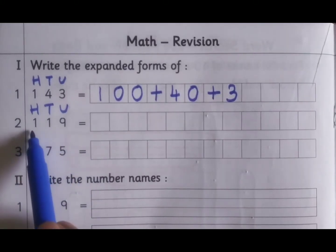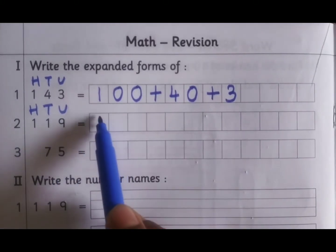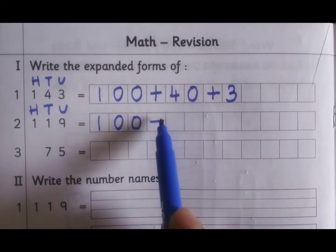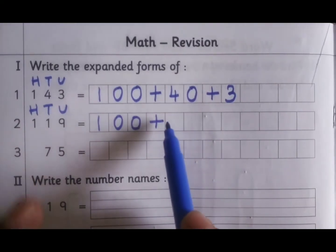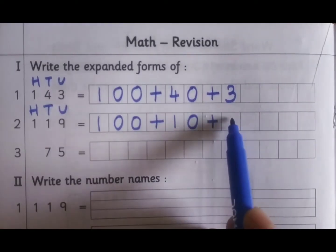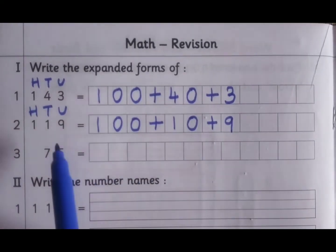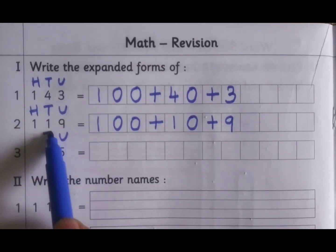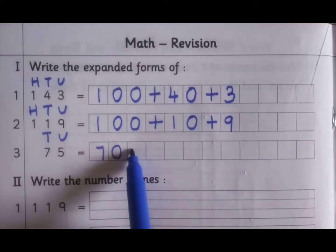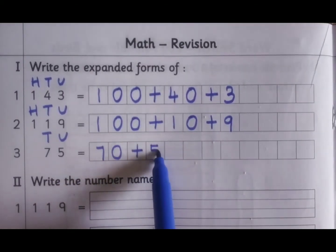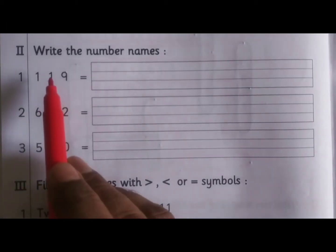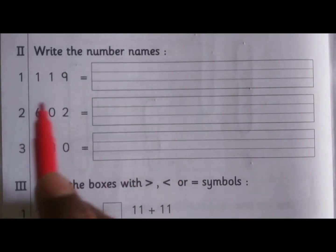Read the number 119, so 100 right first, then expanded form means you have to use a plus sign, then one ten, then nine units. 75, 75, and 7 tens plus five units. Write the number names.